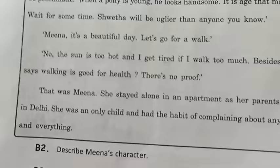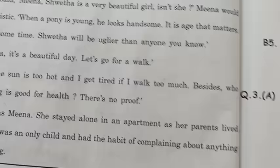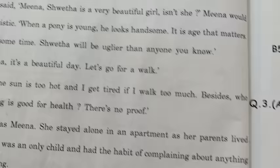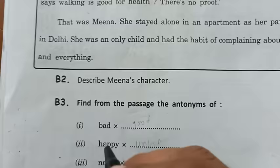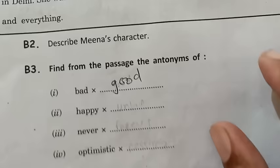Now the paragraph describes Mina's character. We have to write how Mina was. Mina was not a pessimistic girl — it means she was an optimistic girl. She was not speaking negatively and did not have positive views about certain things. We can elaborate her character further. For opposite words: 'bad' is 'good,' 'happy' is 'unhappy,' 'never' is 'forever,' 'optimistic' is 'pessimistic.'